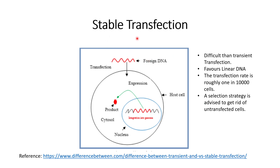Now let us understand stable transfection. In stable transfection, the foreign DNA will integrate into the host genome, and because of this, the expression of this foreign DNA will survive for a longer duration of time. However, stable transfection is quite difficult, and roughly its rate is around 1 in 10,000 cells that will get a stable transfection or host genome integration.